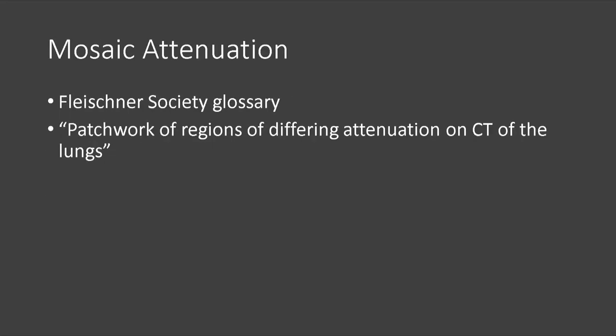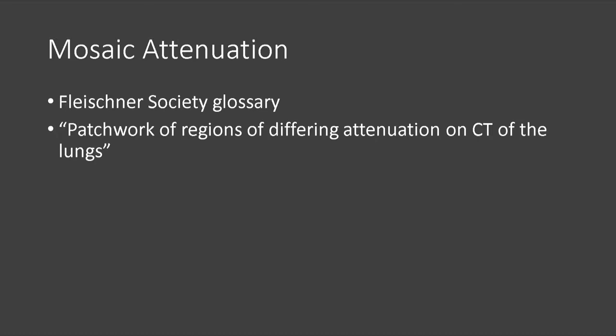So let's first talk about mosaic attenuation. Mosaic attenuation is defined by the Fleischner Society Glossary, a paper written in 2011, as a patchwork of regions of differing attenuation on CT of the lungs.